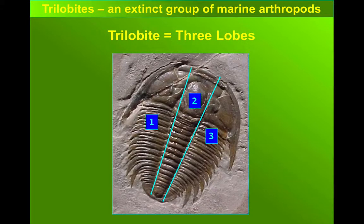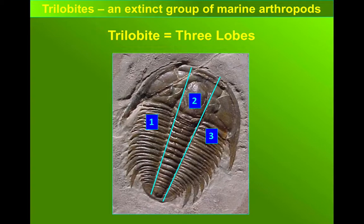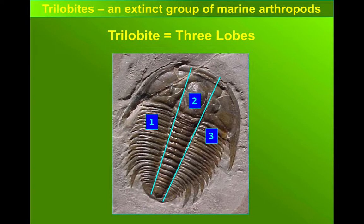The name literally means three lobes. You can see on this diagram the different parts of the trilobite split into these different lobes, but it's not this aspect of the trilobite shell that we are particularly interested in for A-level.